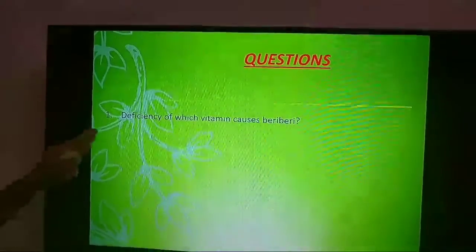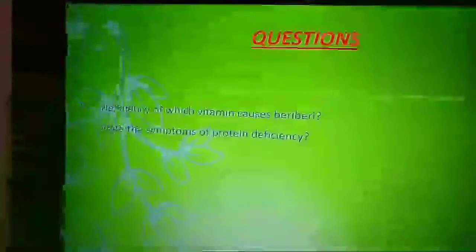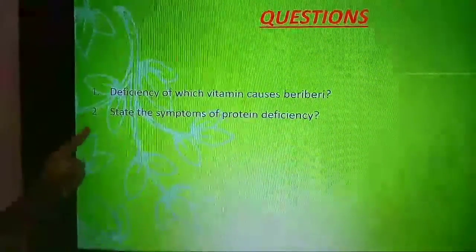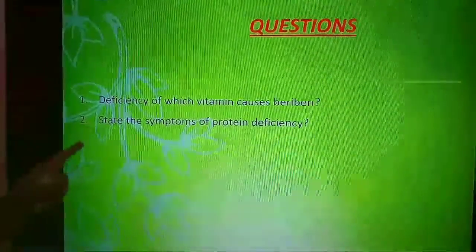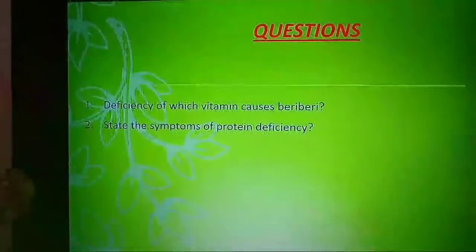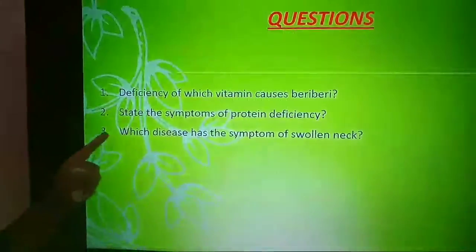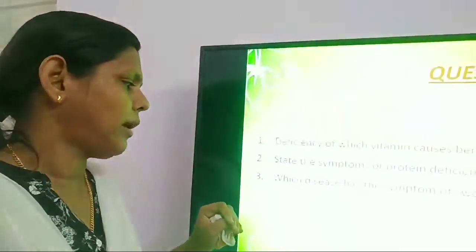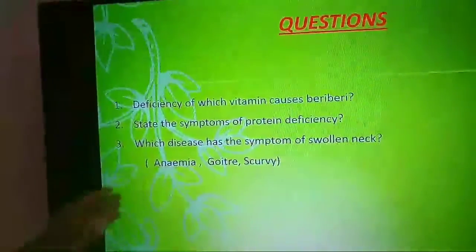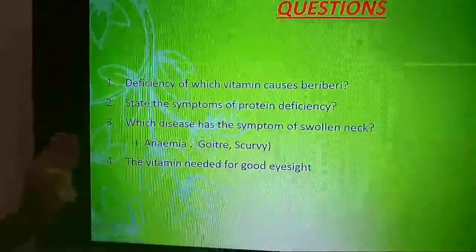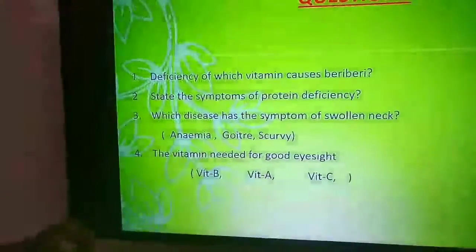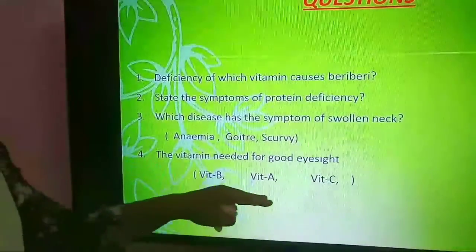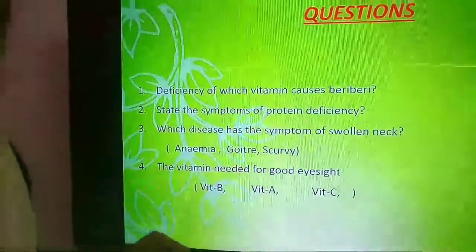Let us answer some questions. Deficiency of which vitamin causes beriberi? It is vitamin B. What are the symptoms of protein deficiency? Stunted growth, discoloration of hair, and swelling of face. Which disease has the symptom of swollen neck? It is goiter — an iodine deficiency disease. Which vitamin is needed for good eyesight? The options are vitamin B, vitamin A, and vitamin C. Vitamin A is the correct answer.